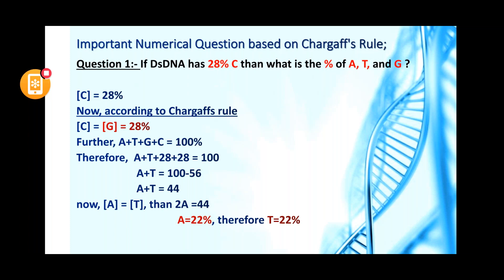The first question: if double-stranded DNA has 28% C, then what is the percentage of A, T, and G? You have to remember that Chargaff's rule is applied only to double-stranded DNA, not for RNA, not for single-stranded DNA. Chargaff's rule states that the concentration of adenine equals the concentration of thymine, and the concentration of cytosine equals the concentration of guanine.